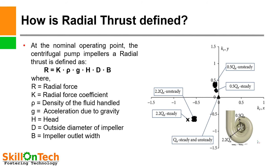So how can we define it? At the nominal operating point, for centrifugal pump impellers, radial thrust is defined as R = K × ρ × G × H × D × B, where R is the radial force, K is the radial force coefficient, ρ is the density of the fluid handled, G is the acceleration due to gravity, H is the head imparted by the pump, D is the outside diameter of the impeller, and B is the impeller outlet width.